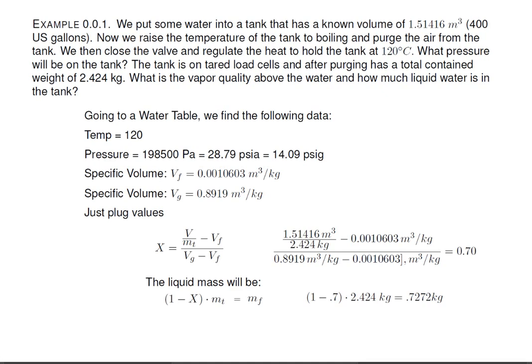What is the vapor quality above the water and how much liquid water is in the tank? Going to a water table, we find the following data. At a temperature of 120 degrees C, we find a pressure of 198.5 kilopascals. Now I used Google to convert that into PSIA, which is 28.79. That's absolute PSI. I needed PSIG, so I subtracted 14.7 from it, and that gave me 14.09 PSIG.